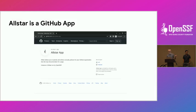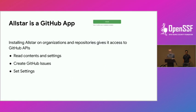Allstar is a GitHub app. You click install and install it on your organizations. It has access to read the contents and settings of all your repositories, creates issues, and sets settings if there's anything that needs to be configured. You can use it not just on public but on private GitHub repositories as well.